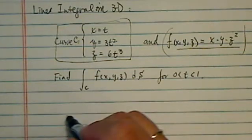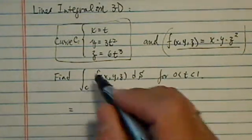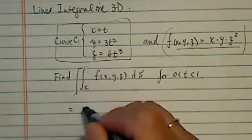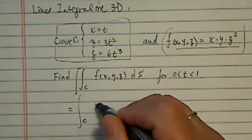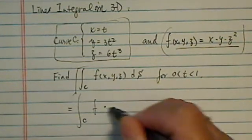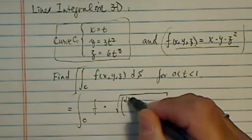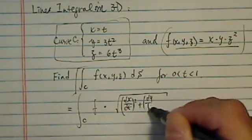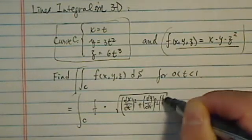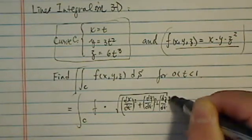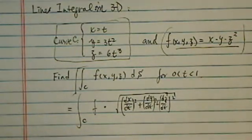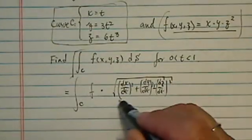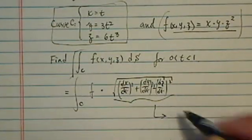The way we do this one is line integral in three-dimension is equal to function itself times, let's look like arc length, dx/dt squared plus dy/dt squared plus dz/dt squared. So let's calculate each part separately. Of course, this part, let's put it on the side.